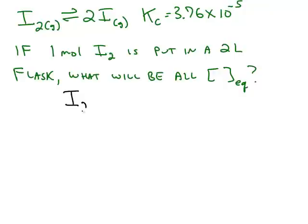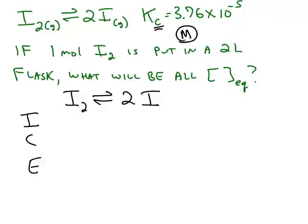So using our ice chart method, we rewrite the reaction, and down the side we fill in initial change equilibrium. This time we're using a Kc, which tells us that we have to get the unit of molarity to plug into this ice chart. Molarity is moles divided by liters, so 1 mole divided by 2 liters is a starting molarity of 0.5.